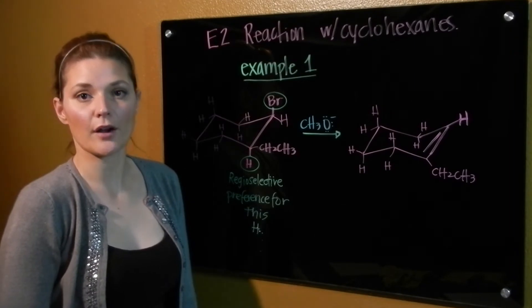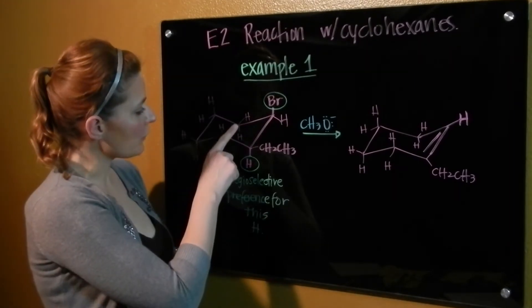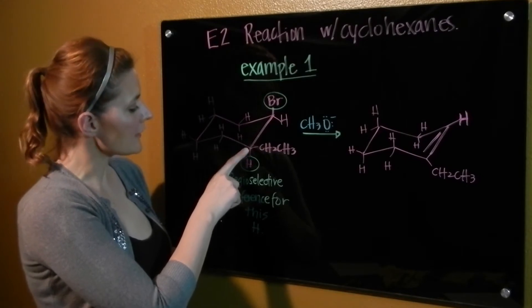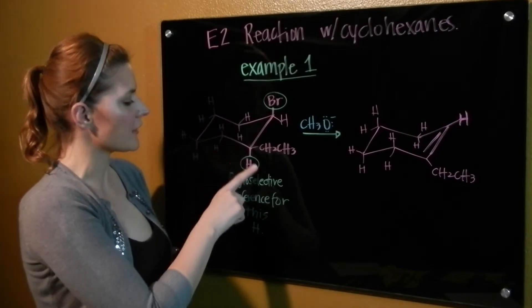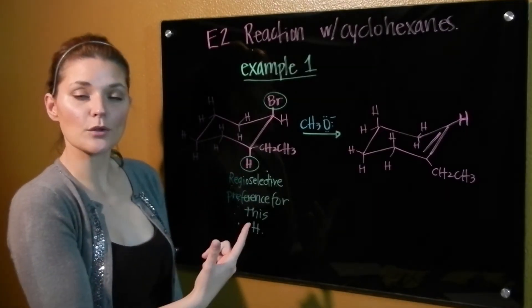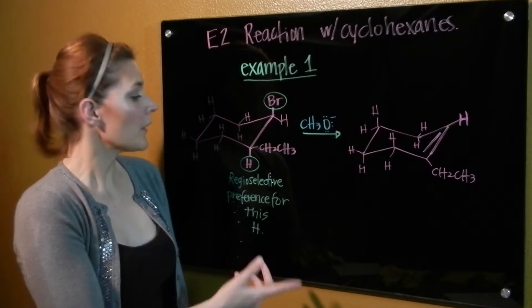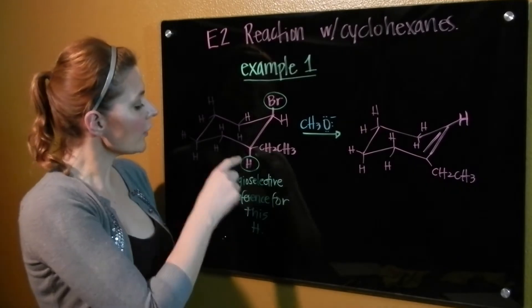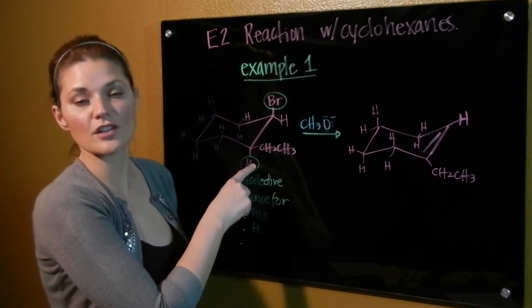The next thing we do is look at the beta carbons. So in this case we have two betas, one right here and one over here. Now, in both cases the beta carbons have an axial H. So the next thing we'll do is look at regioselectivity. Because this here is a more stable alkene that would form, we know that this is the hydrogen that we're going to use in the reaction.